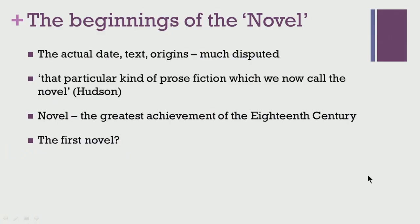When one talks about the beginnings of the novel, it is very difficult to highlight a particular date, text, or exact form through which it evolved. Many of these things are much disputed and a lot of works have argued about different possibilities of novel emerging at different points of time. However, there is a general consensus about the novel emerging in the 18th century, with certain particular authors laying the foundations of this new genre. Since it did not have any literary baggage like poetry, there was no classical model available for imitation.